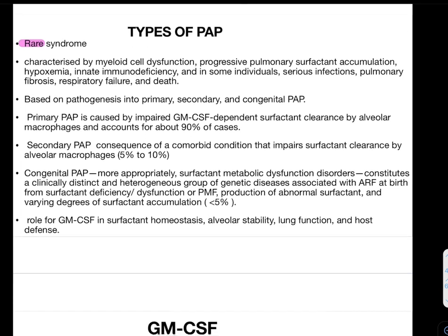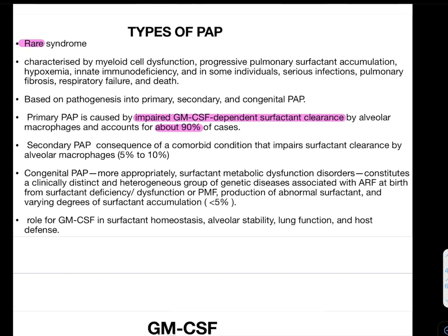Primary pulmonary alveolar proteinosis is caused by impaired GM-CSF dependent clearance. GM-CSF dependent surfactant clearance is impaired by alveolar macrophages and accounts for 90% of cases. Secondary pulmonary alveolar proteinosis is a consequence of comorbid conditions that impair surfactant clearance by alveolar macrophages — it is a heterogeneous group of diseases comprising 5 to 10% of cases. Third, congenital pulmonary alveolar proteinosis is more appropriately termed surfactant metabolic dysfunction disorder.